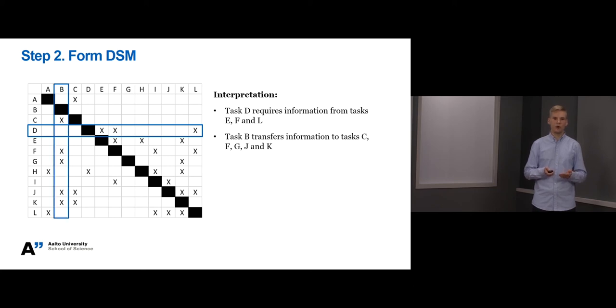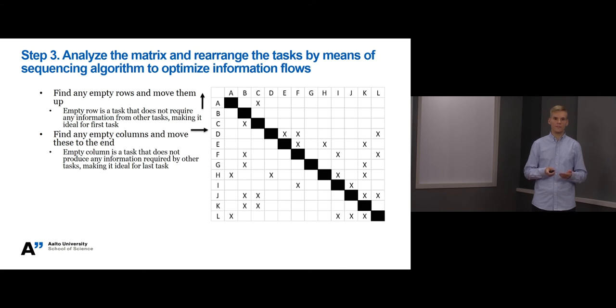Okay, let's move on to the third step. In the third step we rely on sequencing algorithm to optimize the information flows between tasks. The sequencing algorithm begins by identifying candidates for the earliest and latest tasks. In an ideal situation, the first task would require no information from other tasks, making it a suitable candidate to start the project. Respectively, the last task would not produce any information to other tasks, making it a suitable task to finish off the project. In this project alpha we can see that task B requires no information from other tasks. So let's move it up as the first task. Please remember to always move the respective column as well so that the diagonal follows correctly.